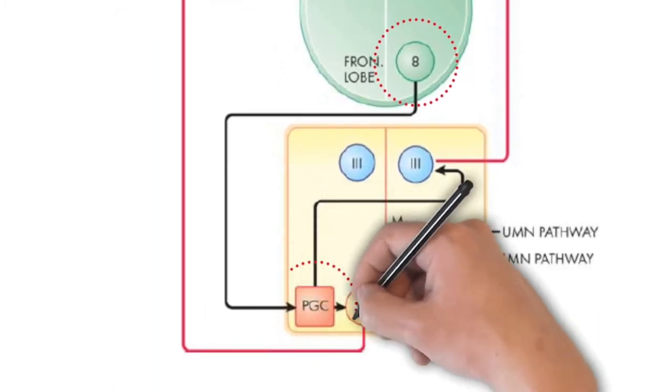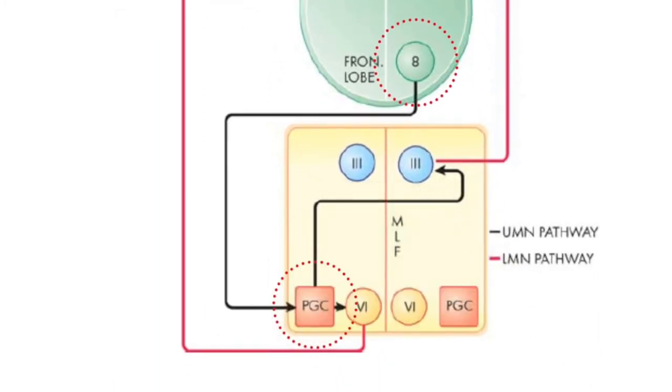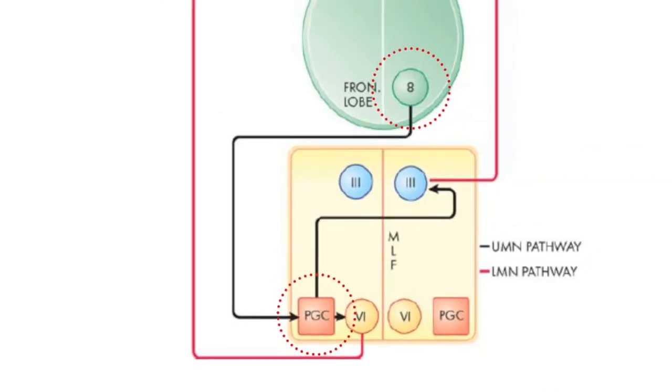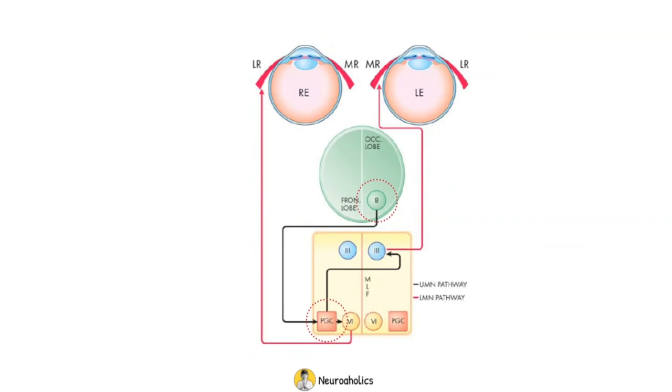In the pons is a second gaze center, known as the pontine gaze center or the PPRF, the paramedian pontine reticular formation. This is a center for ipsilateral horizontal gaze.